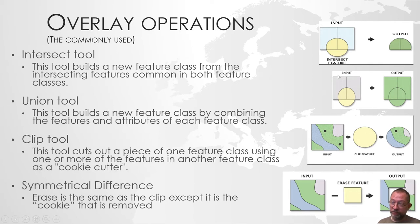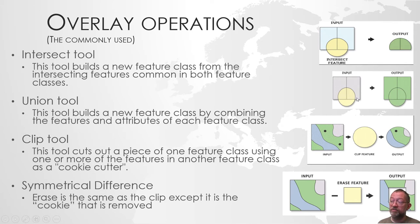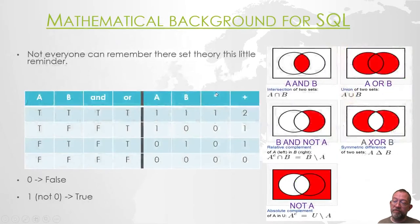Somewhat the same with the union: we have again our two input layers, two polygons in one layer and one polygon in the other. In the output, we get all unique combinations — so we have five polygons, which are the unique combinations of those two layers. It's not only just the areas returned; it's unique combinations of the layers within these areas. Our intersect and union tools compare to the AND and OR commands in SQL.